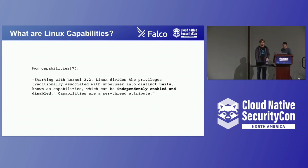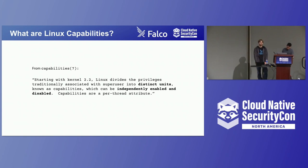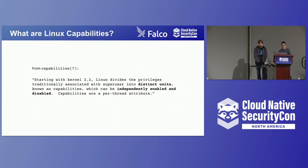Thanks, Stefano. As we all know, traditionally we used to distinguish Linux processes into two different categories: privileged processes and unprivileged ones. This model is binary and it can be risky from a security perspective. Privileged processes — those running with effective user ID equal to zero — can bypass all kernel permission checks. Unprivileged processes are subject to all kernel permission checks, usually based on their effective user ID or group ID. From an attacker's standpoint, this model is exploitable by attacking root processes directly. Once a root process is compromised, the whole system is at risk.